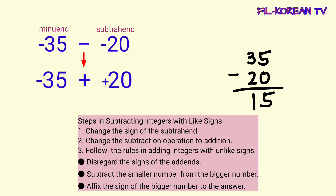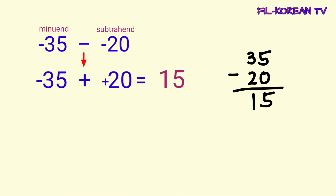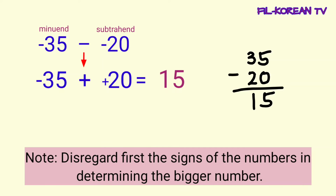Kaya, yung answer ay 15. Ngayon, itong answer natin, lalagyan natin ng sign. Kukopyahin lamang natin ang sign ng mataas na number. Ang mataas na number ay 35 at ang sign niya ay negative. Kaya, lalagyan natin ang answer ng negative sign. So, negative 35 minus negative 20 equals negative 15.